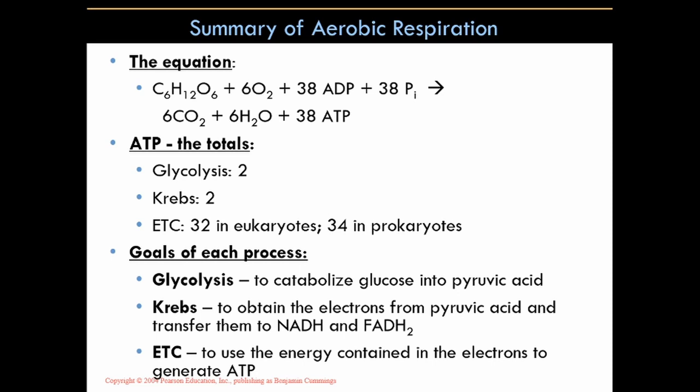Here's a summary of the overall equation: C6H12O6 (glucose) plus oxygen plus 38 ADPs plus 38 phosphates yields carbon dioxide, water, and 38 ATPs. This equation is for prokaryotes. If this were eukaryotes, the number would be 36 instead. There is variation in how many ATPs are actually produced from cell to cell and organism to organism.